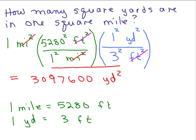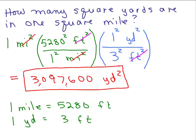It's a lot of square yards — a square mile is huge. Think about it: 1 mile is 5,280 feet, but a square mile would be 5,280 times 5,280 square feet. So this is a big number, and yeah it should be. That's how many square yards are in 1 square mile.